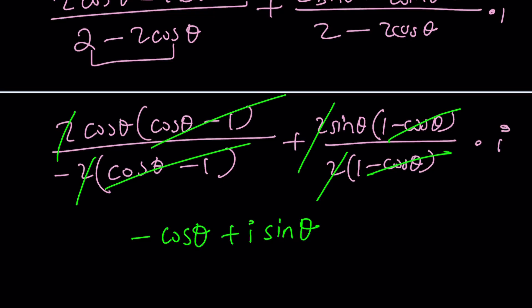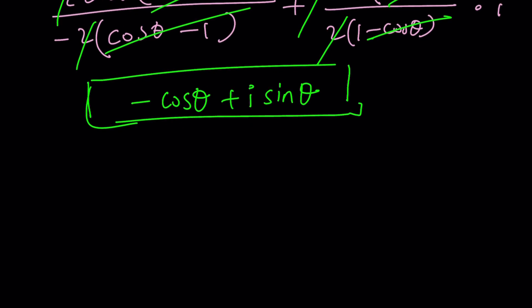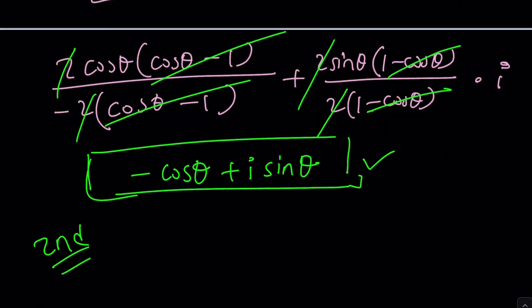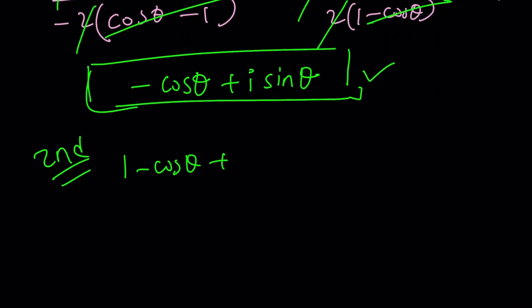But what is that? Obviously, we want to be able to write it in a much simpler form. Maybe the second method is going to help us do that. Let's proceed with the second method. What was the problem? It starts with 1 minus cosine theta plus I sine theta. That was a plus sign in the numerator and a minus sign in the denominator.